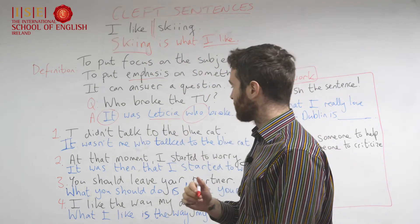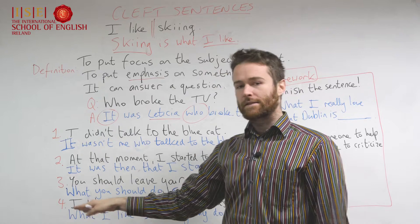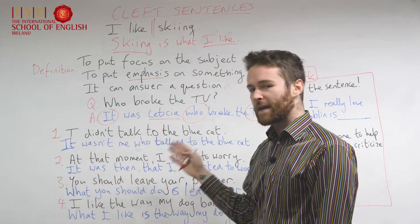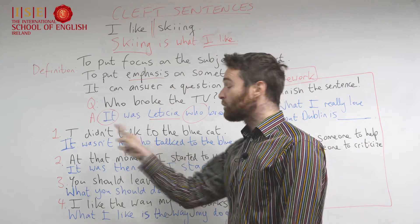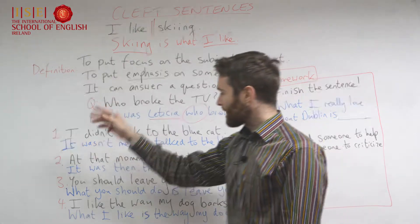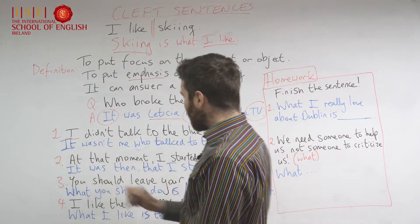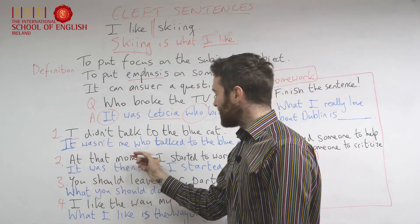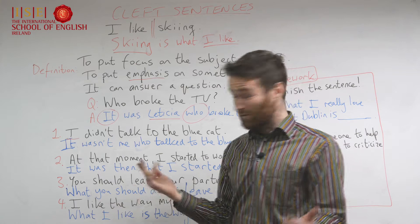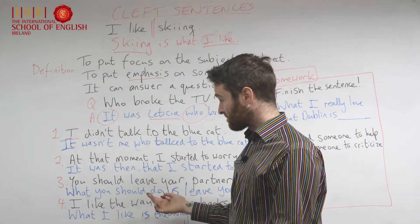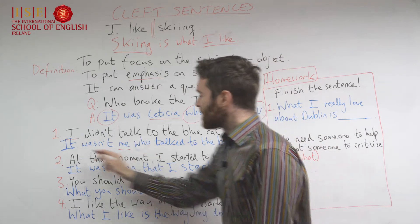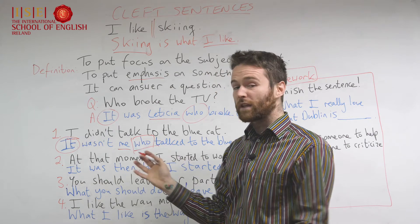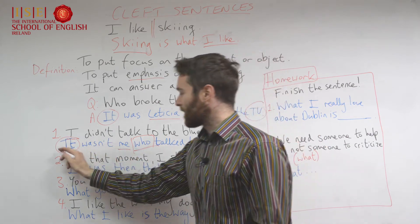Here are the four ways to look at it — four simple ways. The first two are similar. Let's start with an example: 'I didn't talk to the blue cat,' so 'It wasn't me who talked to the blue cat' — same meaning. We've put the focus on 'me.' So 'it' and 'who' are the key words there. We start off with 'it' and in the middle we put a relative pronoun.